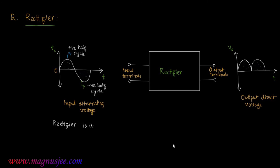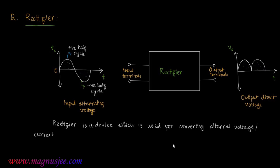A rectifier is a device which is used for converting alternating voltage or current into direct voltage or current. That is, a rectifier converts alternating current into direct current, or alternating voltage into direct voltage.